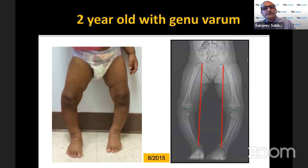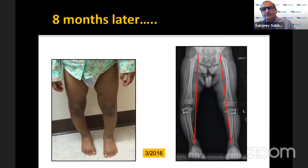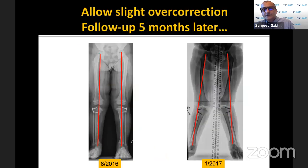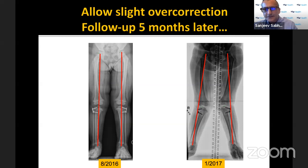Here is another child treated similarly with overcorrection on both sides. This is probably the youngest I've done — just over two years old, two and a half. I think anything younger is probably too young, but now that we have better implants this is reasonable as long as you're careful and don't violate the underlying perichondrium.